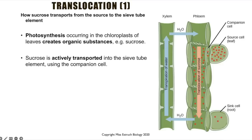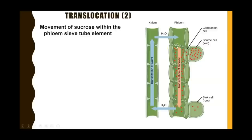When we say the sucrose is transported via the companion cell, we mean it uses the ATP produced by the mitochondria in the companion cell, because the sieve tube element doesn't have those organelles. That is the detail needed to explain how sucrose created in photosynthesis gets into the sieve tube element.